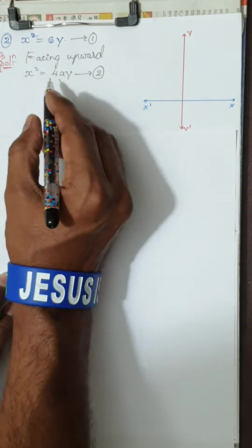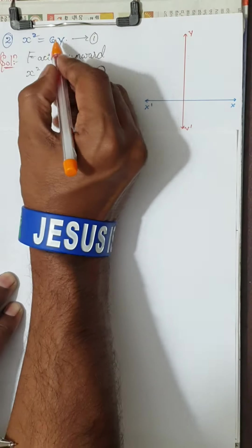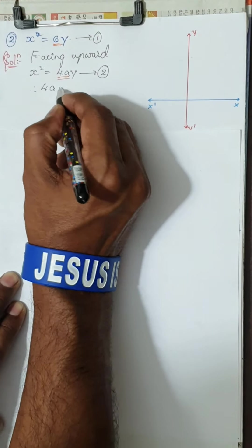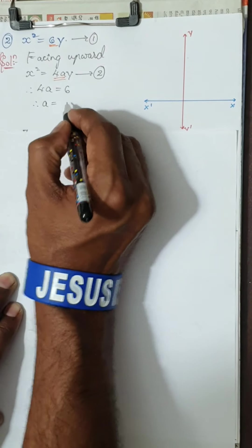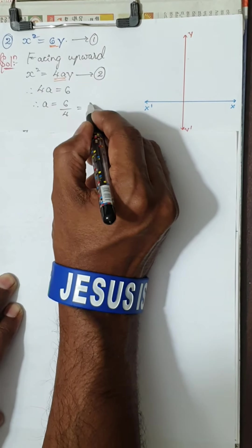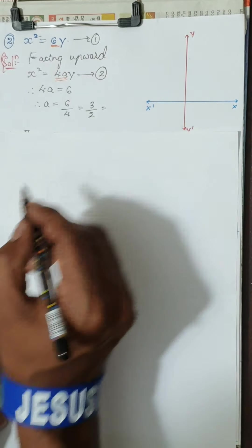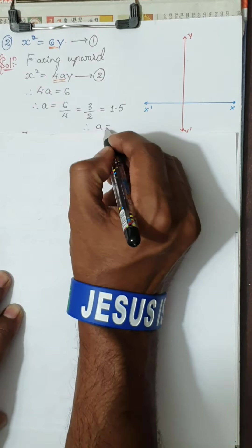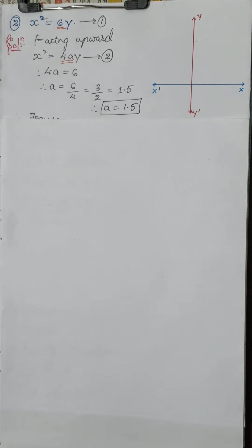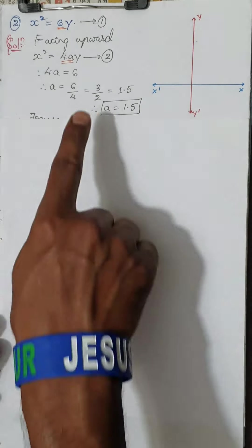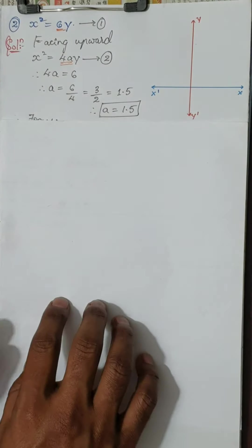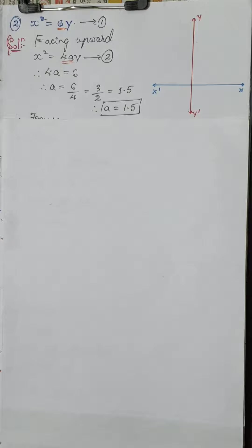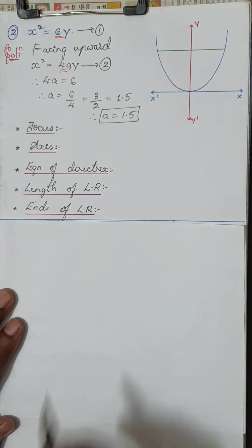Comparing equation 1 and 2: the coefficient of y here is 6 and in the standard form it is 4a. Therefore, 4a = 6, so a = 6/4 = 3/2 = 1.5. The parabola is facing upward. The focus of an upward-facing parabola is (0, a) = (0, 3/2).